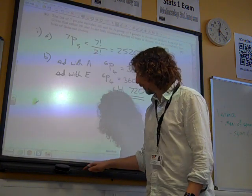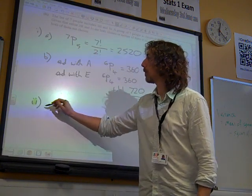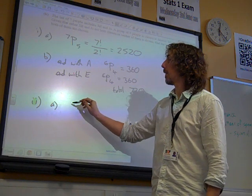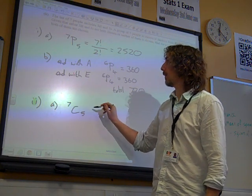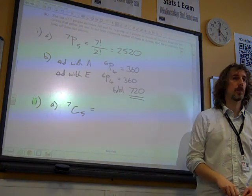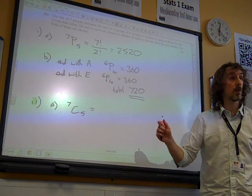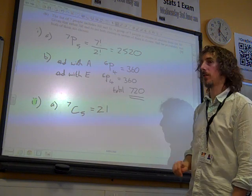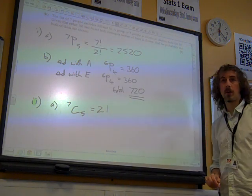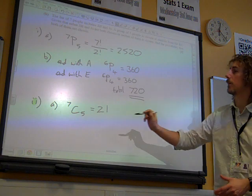So, really, the mark here is just for doing 7C5 instead of 7P5. Which is 21. Okay, so 21 possible teams of five.